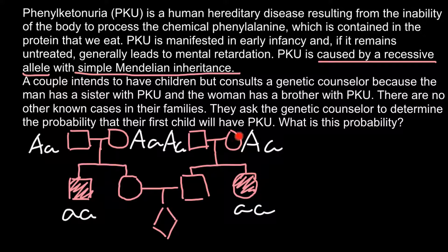Because this is a recessive genetic disorder, the phenotypically normal parents would still have a probability of having an affected child. In order to find the probability for this couple to have an affected child, we also have to find the probability for each of them to be heterozygous — only then can this couple have any chance of having an affected child.